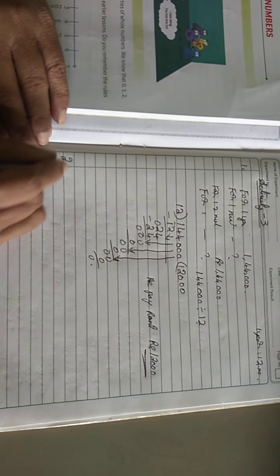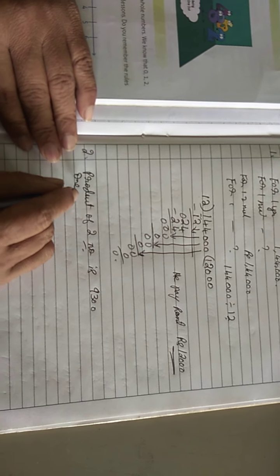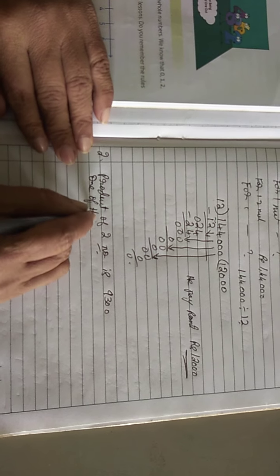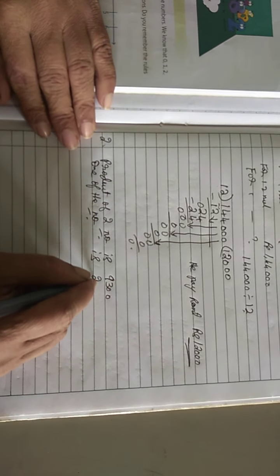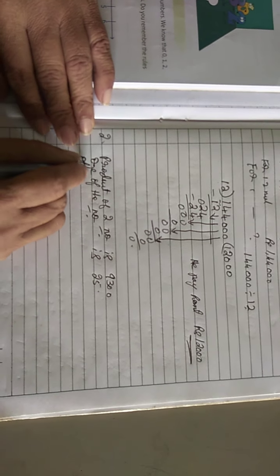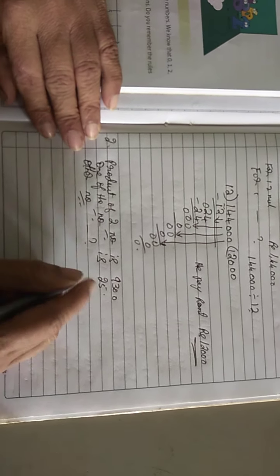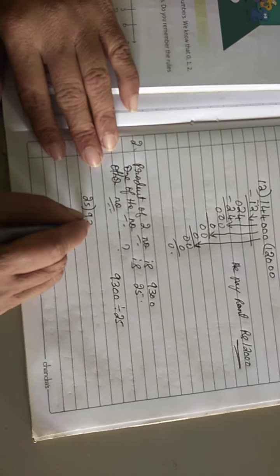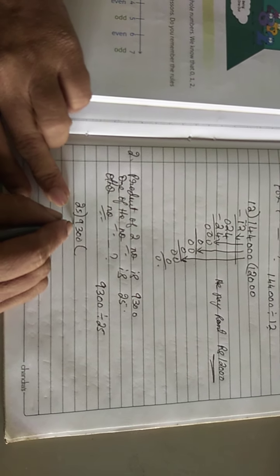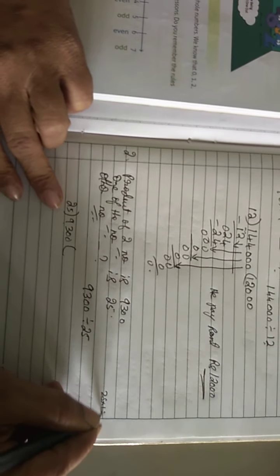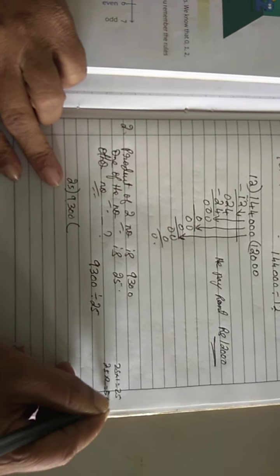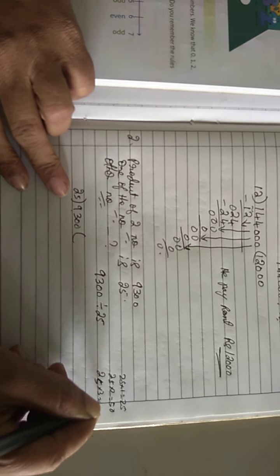That is question number 1. Now question number 2: the product of 2 numbers is 9,300. One of the numbers is 25; the other number we have to find. So 9,300 divided by 25. From 25 you divide 9,300 — you will get the other number. So 93 — go for 25 ones table in the working column. 25 1's are 25, 25 2's are 50, 25 3's are 75, 25 4's are 100.